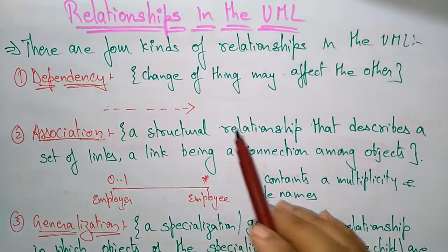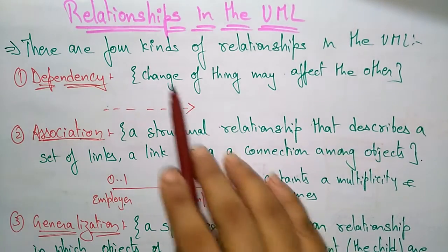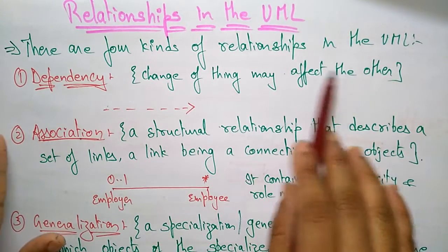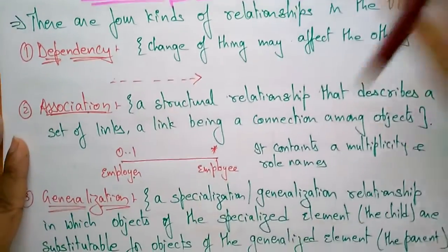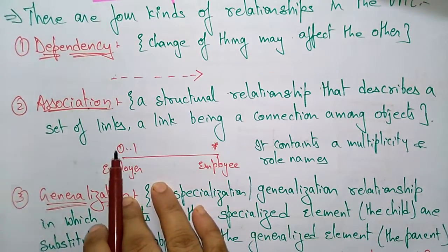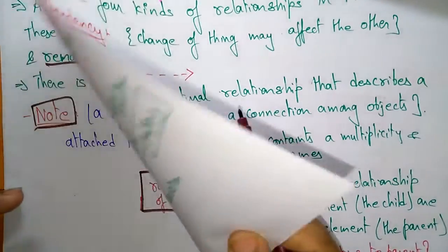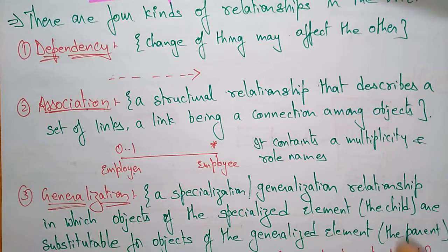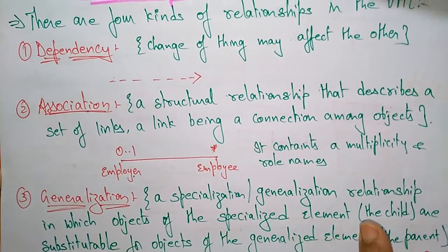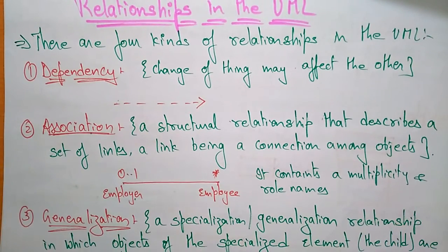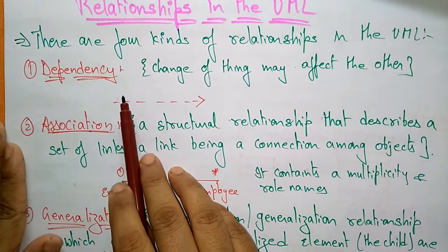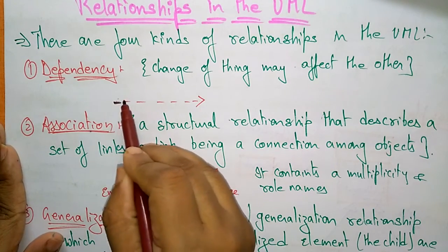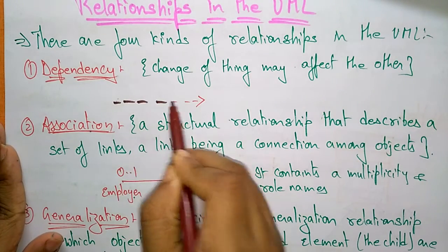Now let us see the relationships. The second building block is relationships, and there are four kinds of relationships in UML: dependency, association, generalization, and realization. So total four kinds of relationships are present in Unified Modeling Language.